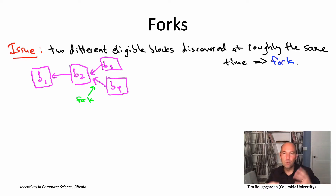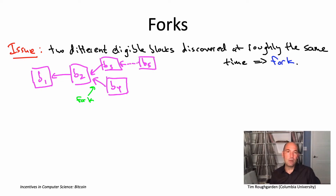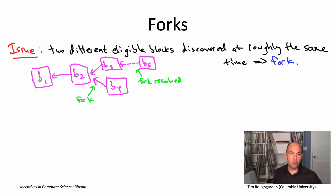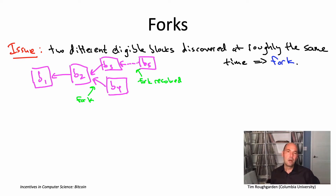At some point, some miner will succeed in finding an eligible block B5 and will have chosen to extend either B3 or B4. Say they extend B3 — once that extension happens, the ambiguity is resolved, because now there's a unique longest chain and all miners know they should try to extend B5. It's possible that one miner finds B5 extending B3 at the same time another finds a block extending B4, perpetuating the tie — but that's pretty unlikely. Very quickly, a miner will find a block extending one of the two chains well separated from anyone else, the tie is broken, and all miners extend the longest chain.